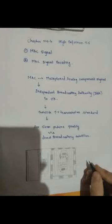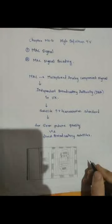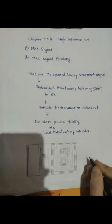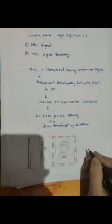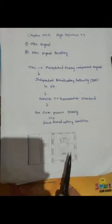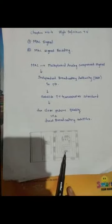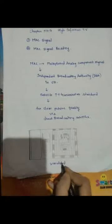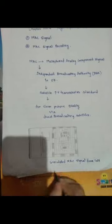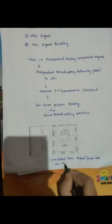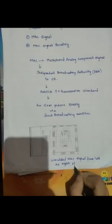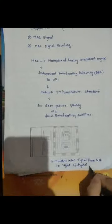Now we have seen the basics of MAC and what is the MAC signal. Here we have a diagrammatic representation of how a MAC signal looks. Starting from left to right it is in packetized form — you can see the conversion starting from left towards its right. This is the simulated MAC signal from left to right of digital data.